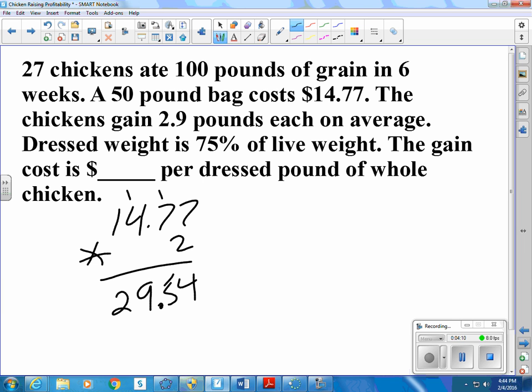Gained a total of... There were 27 chickens, an average of 2.9 pounds per chicken. For a total gain of 78.3 pounds.